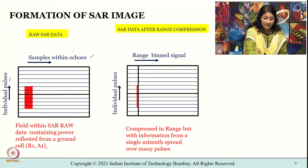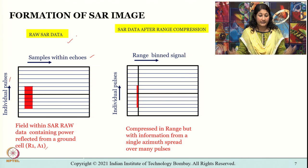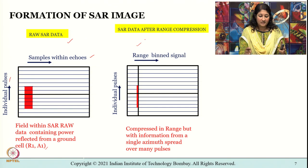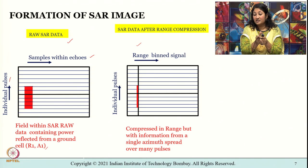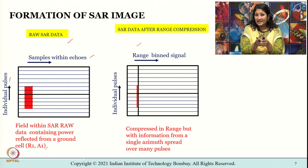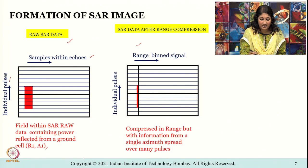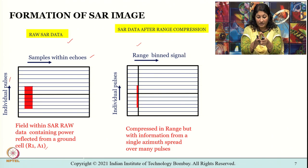On the left side you have the raw SAR data. In the middle is the same image after range compression — the transmitted pulse is compressed in one range bin while the echoes are spread along the azimuth direction. You can see the red shaded region compressed in range but with information from a single azimuth spread over many pulses.